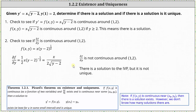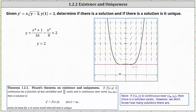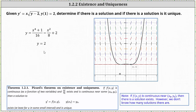Looking at the slope field for y prime equals x times the square root of the quantity y minus two, the initial value problem actually has two solutions. First, there is a polynomial solution graphed in black, which fits nicely in the slope field and passes through the point one comma two given by the initial condition. Second, there is the trivial solution y equals two, which also passes through one comma two. When y equals two, y prime equals x times zero, which is zero — and y equals two does have a slope of zero everywhere. Both are solutions to the initial value problem, which is why there is no unique solution.